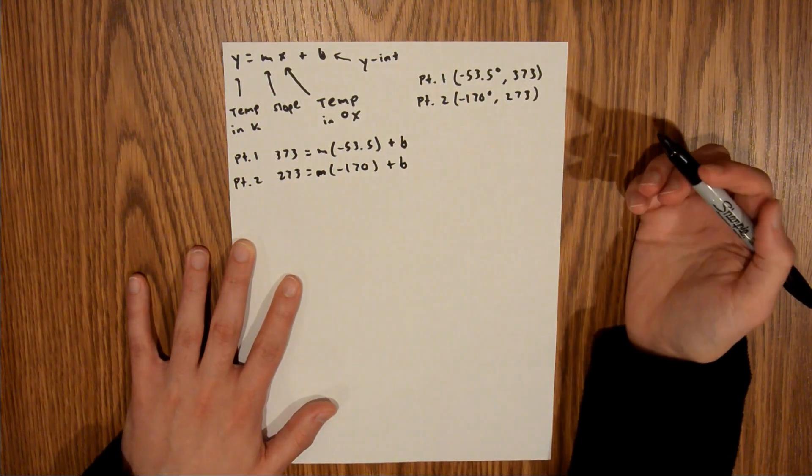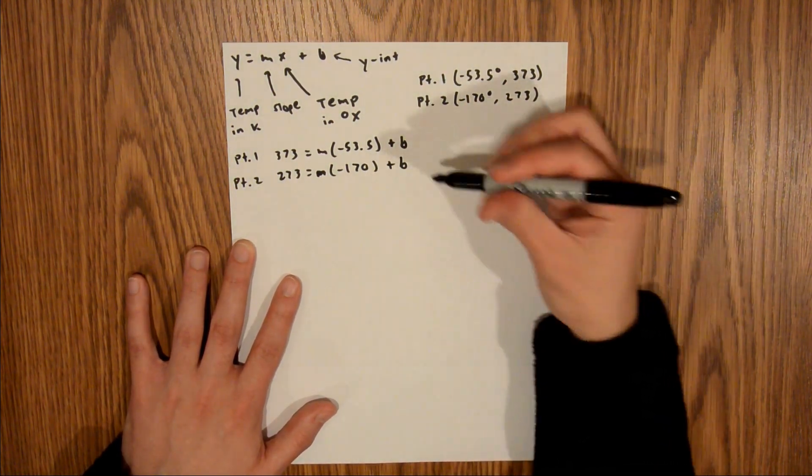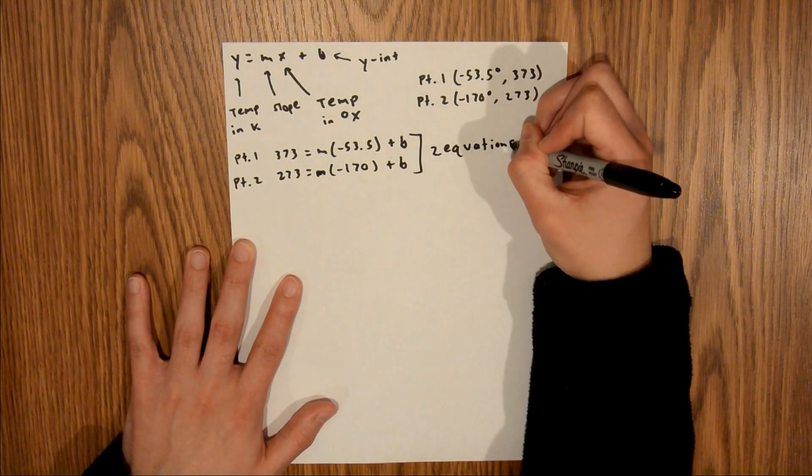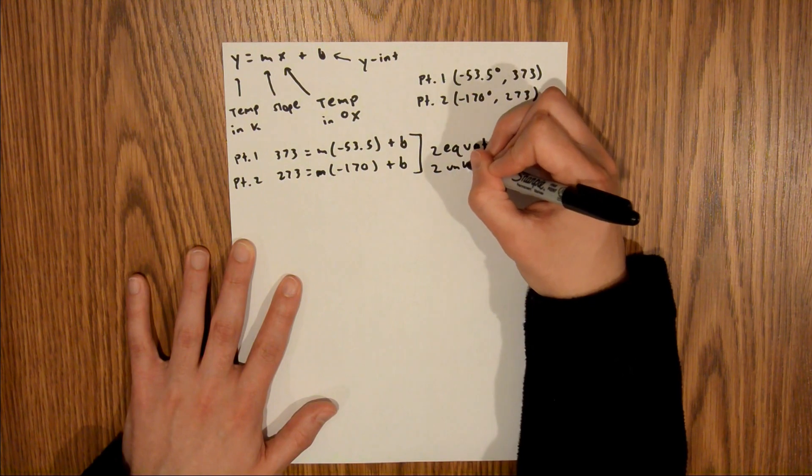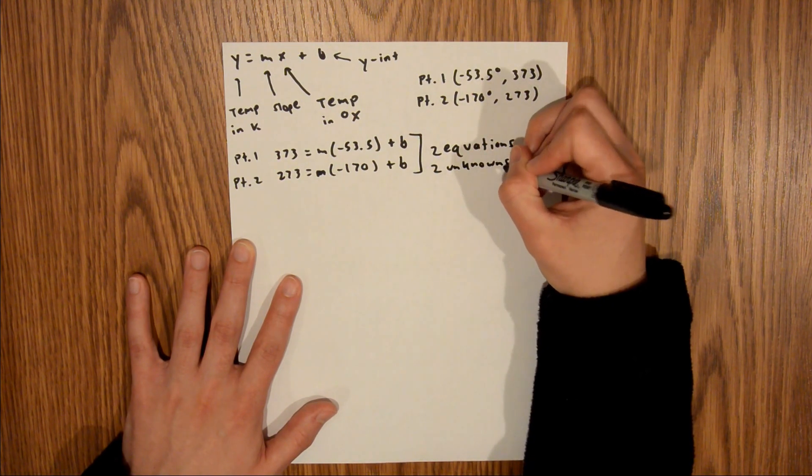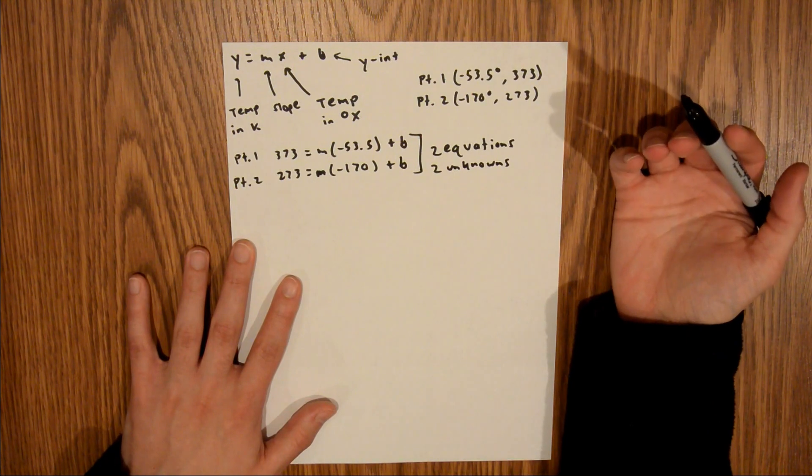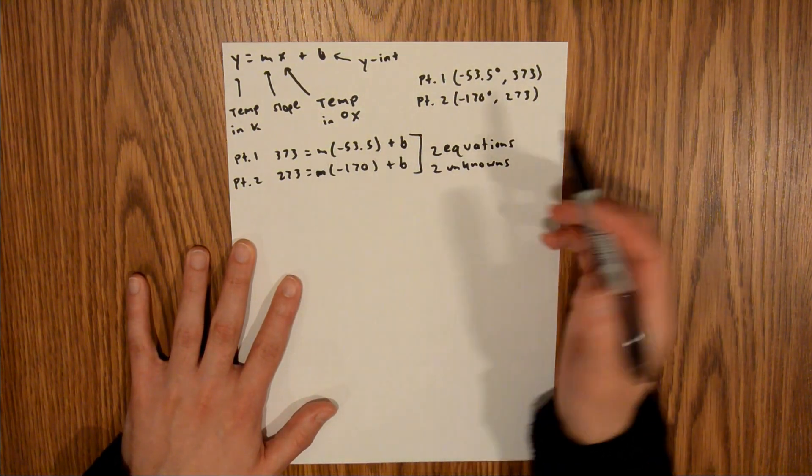Now if we look at this, we have two equations and two unknowns. Two equations, two unknowns, meaning that these two equations can be simultaneously solved using an equation solver to give you your slope and your y-intercept.